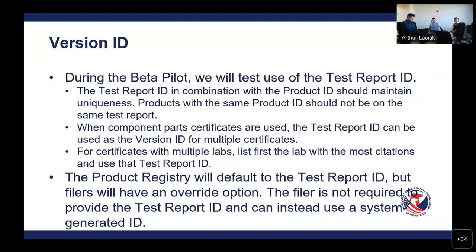However, this test report ID is not actually a required field for our citations or the CFR. So we'll make this optional, which also means that we will create a system-generated ID that you could use instead. I think our developers will default to the test report ID, and if you agree to that as well, you wouldn't have to provide a version ID. You just use your test report ID from your certificate for the version number, and unless you specify otherwise, we'll override out the system-generated ID. We haven't really decided how many digits that will be, but we'll update you on that in the future.